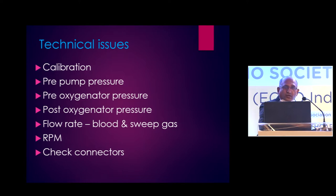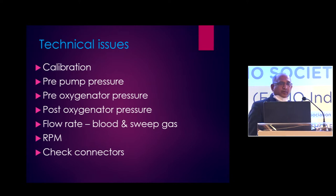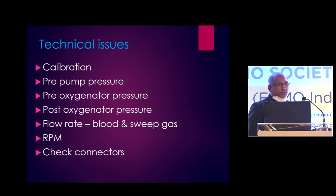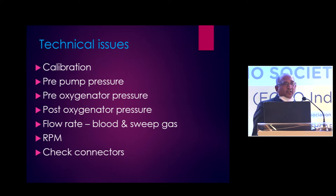How do we assess technical issues? First, see whether calibration is proper — whether your flow probe is attached properly, and whether pressure lines have been calibrated. Check the circuit pressures. If the pre-pump pressure is too negative it means the patient is volume depleted or there is something wrong with the cannula position. Look at the pre- and post-oxygenator pressures — the delta pressure will be elevated if there is oxygenator failure. See the flow rate, blood flow, and sweep gas rate.